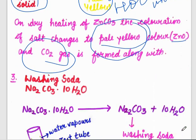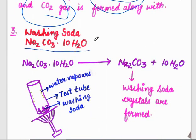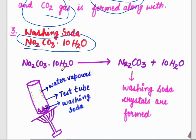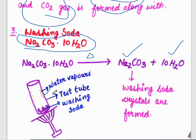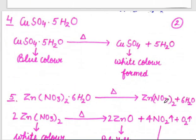Moving on to washing soda, its formula is Na2CO3·10H2O. On heating, it is converted into Na2CO3 and 10 water molecules are released. The observation is that a small amount of water molecules appear on the wall of the test tube. Water vapors are present, and washing soda crystals are formed.